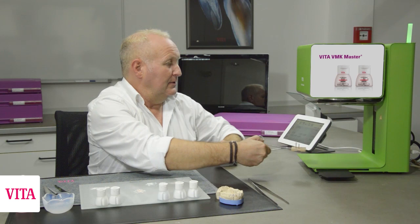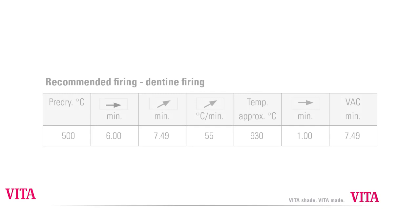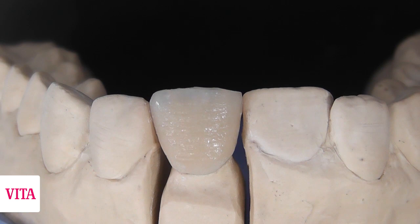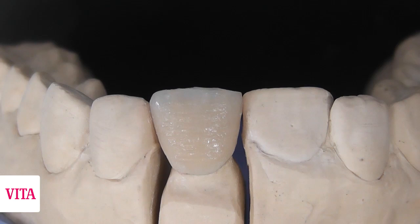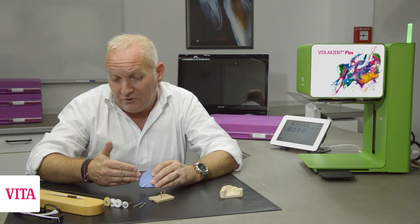First firing. Do a short control to confirm the right temperature, then press the start button. After the first firing, you can see all the surface textures we built up with the brush before firing are still visible afterward. VMK Master's low shrinkage rate enables us to bake crowns in only one bake. Even the approximate contact areas are perfect. The only thing remaining is fixing or adjusting the surface, which I do with a diamond-shaped flame instrument.